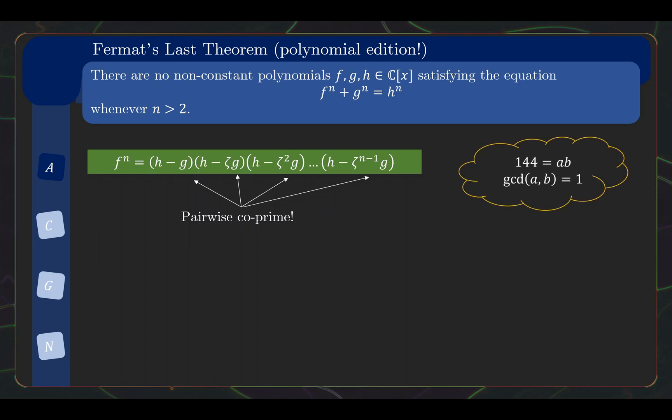Now you may be familiar with the integer case that if you have a square number like 144, written as a product of two coprime positive numbers a and b, then a and b must be squares. This is because the repeated factors cannot be shared across a and b. The case for polynomials is similar, which implies that each of the factors in the green box is the nth power of a polynomial.